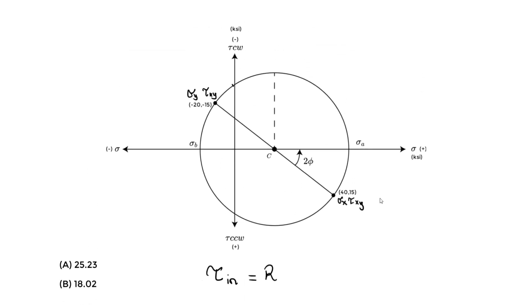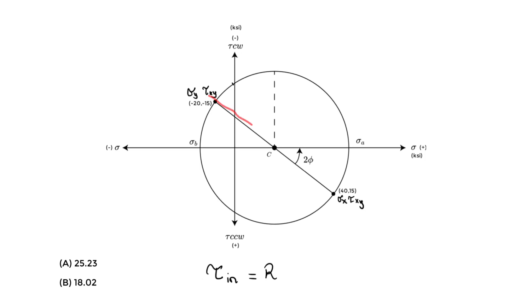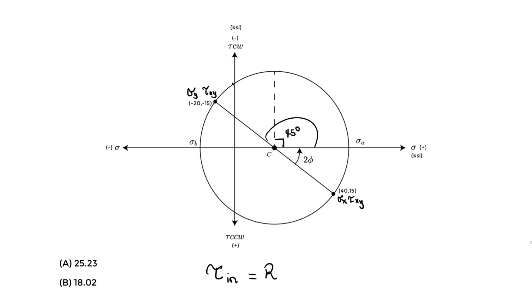We need to find this radius. Starting at the line representing original stress conditions, we rotate counter-clockwise by 2 phi, then rotate an additional 45 degrees to reach the maximum in-plane shear stress. On the original stress element — the regular coordinate system — it's half of that, so phi plus half of 45 degrees. On the Mohr's circle, tau max corresponds to the radius.